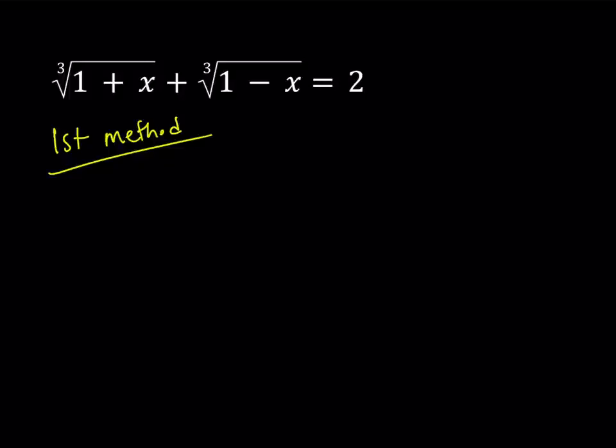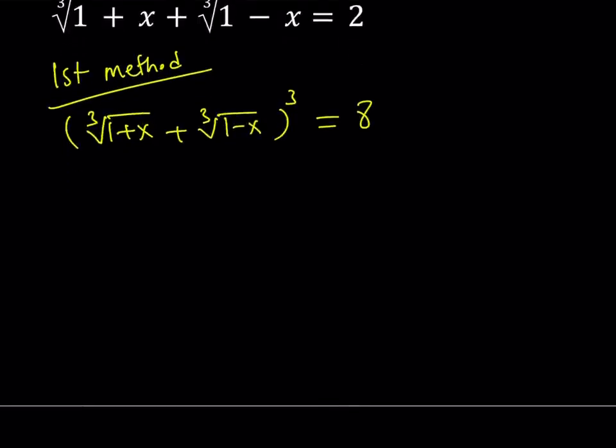Now, our first method involves cubing both sides. So if you cube both sides, you're going to get 8. Now in order to be able to cube this, I'm going to use the following formula.